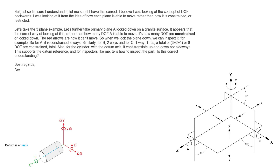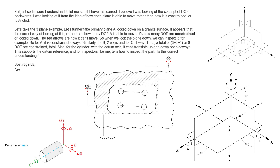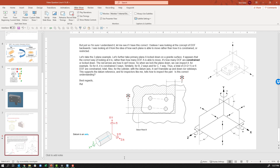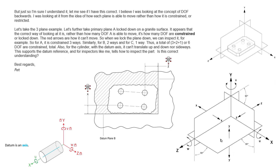Let's take the three-plane example. Primary datum A, locked down on a granite surface. Let's assume that the granite surface is this hatched area right here. The correct way of looking at it, rather than how many degrees of freedom datum A is able to move, is how many degrees of freedom are restricted. Datum A only restricts degrees of freedom. With datum A restricting degrees of freedom, the part can still move if you don't have B and C — those are open — but datum A only constrains or locks down degrees of freedom.